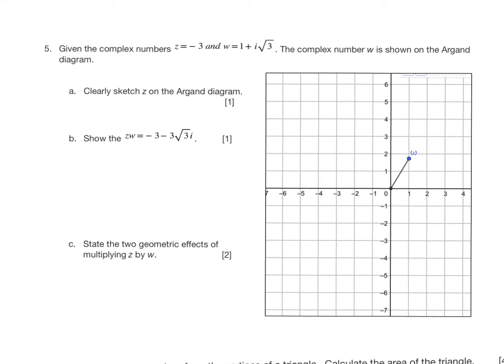So take a look at this problem here. I'm going to go through this whole thing. We have z is negative 3. I'm going to sketch on the Argand diagram. So z is simply this here. Here is z, and here is w, and w is 1 plus root 3i.